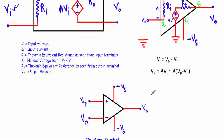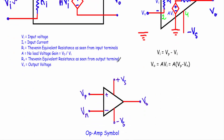This is the symbol of an operational amplifier, which contains three legs. The positive terminal indicates the non-inverting input, and the voltage applied there is Vp. The negative terminal indicates the inverting input, and the voltage applied there is Vn. The output voltage is taken from the output terminal, and we bias this operational amplifier with two separate bias voltages.